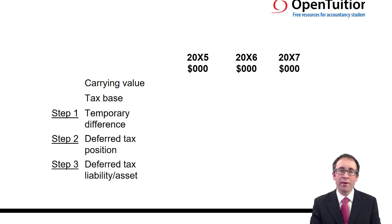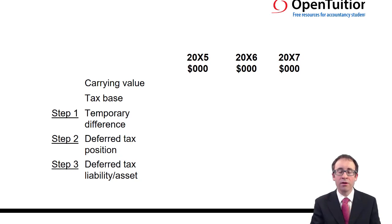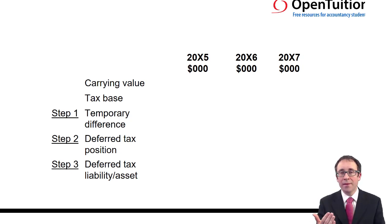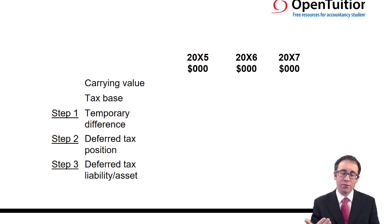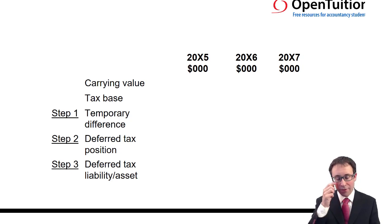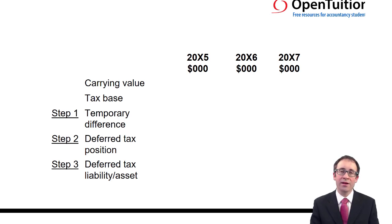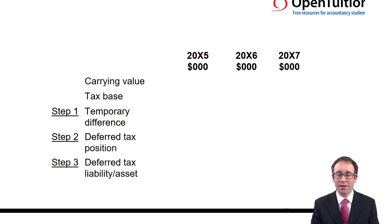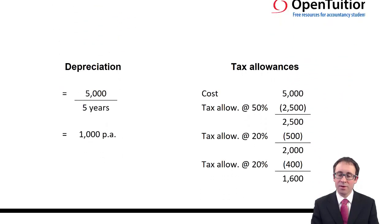We need to work out deferred tax. We've already said there are four steps to follow: looking at the temporary difference, applying the tax rate to the temporary difference, and working out whether you have a deferred tax asset or liability depending upon whether the carrying value is greater than or less than the tax base.